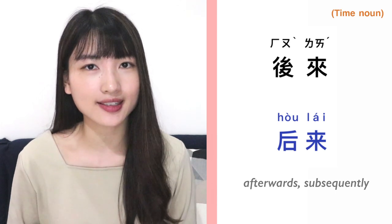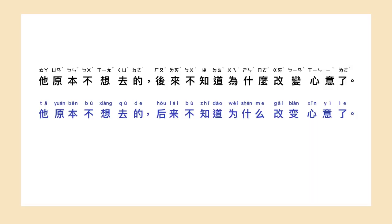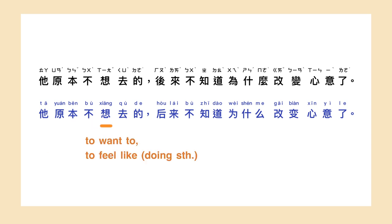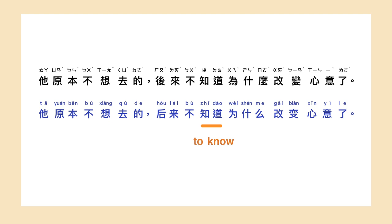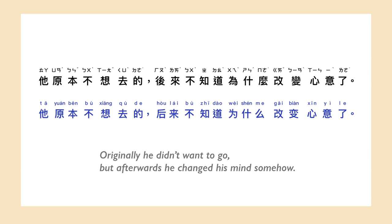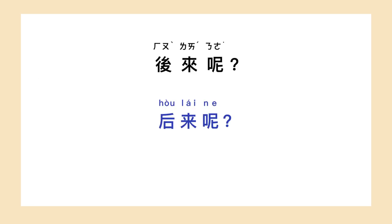If you want to say 'afterwards' or 'subsequently' in Chinese, you can say 後來. For instance: 他原本不想去的,後來不知道為什麼改變心意了 — Originally he didn't want to go, but afterwards he changed his mind somehow. Another example: 後來呢 — What happened next?